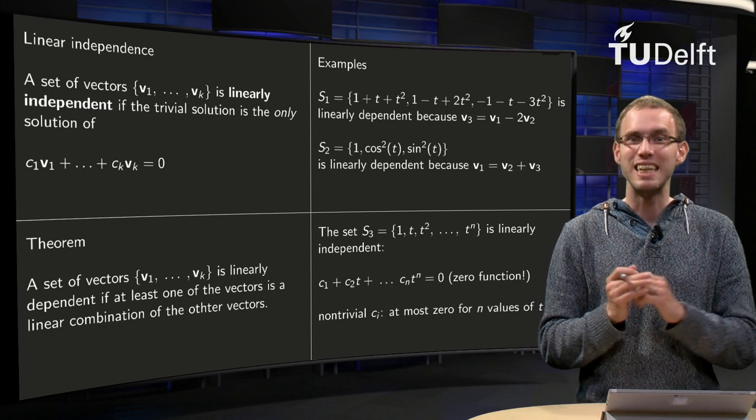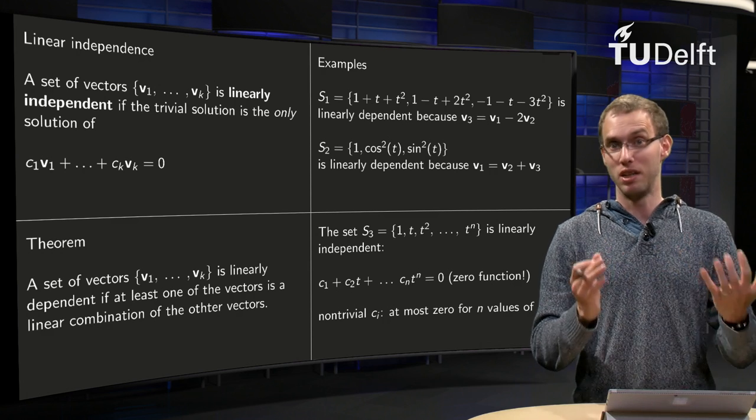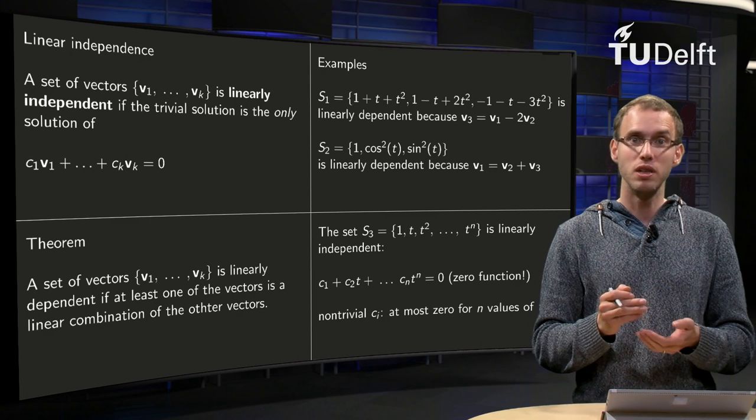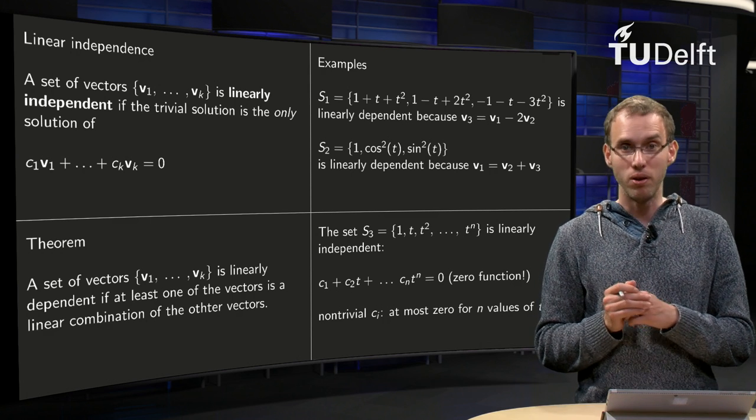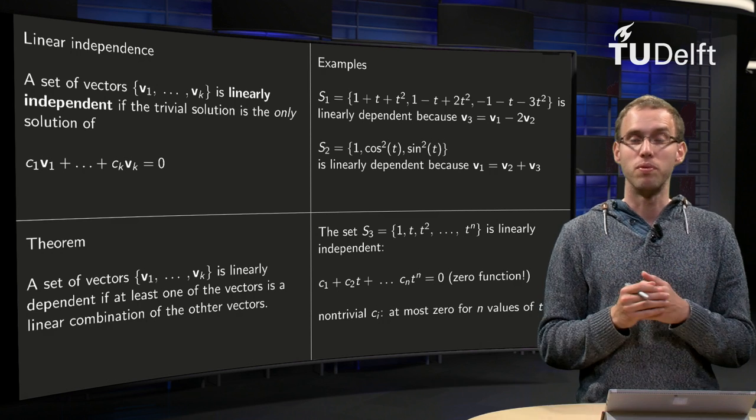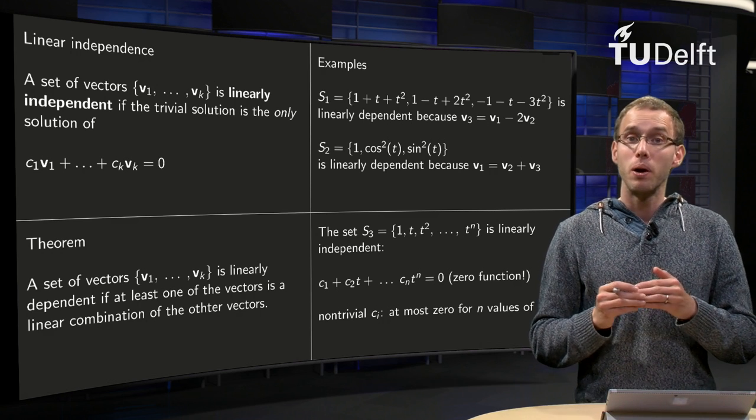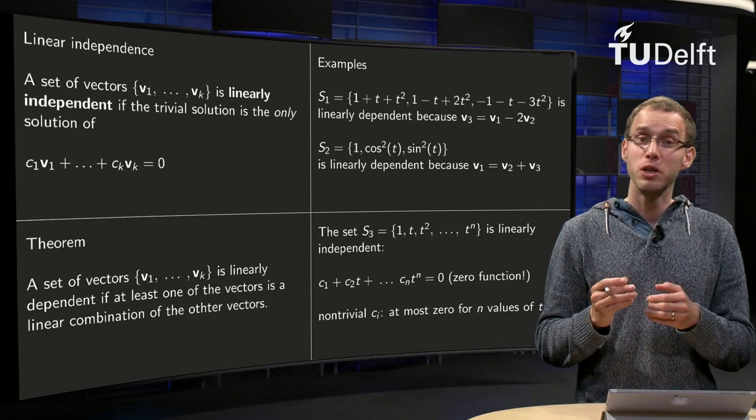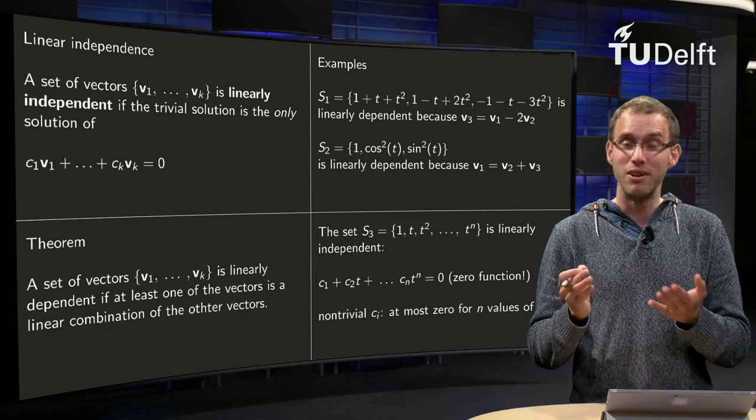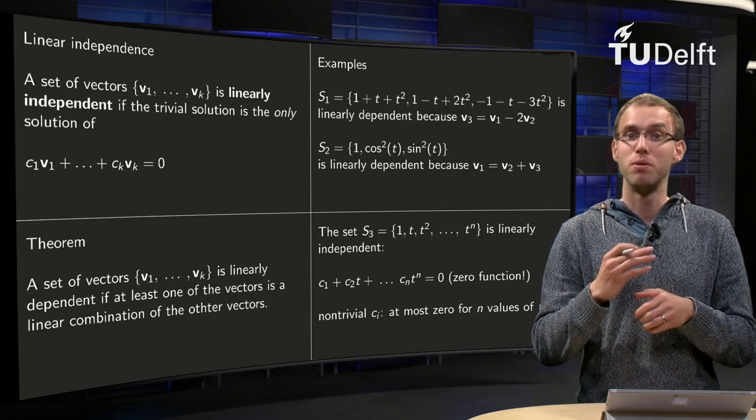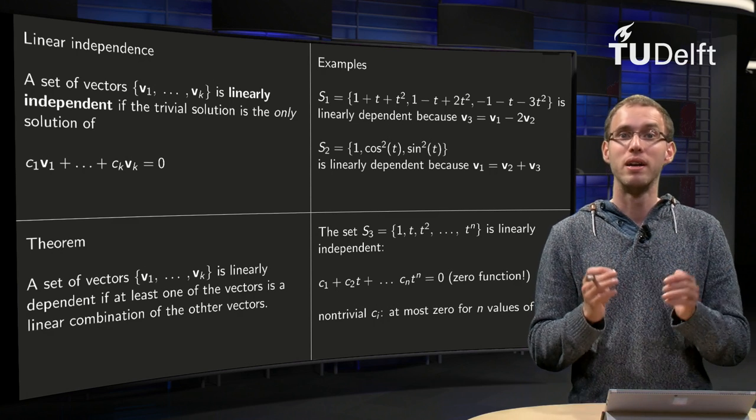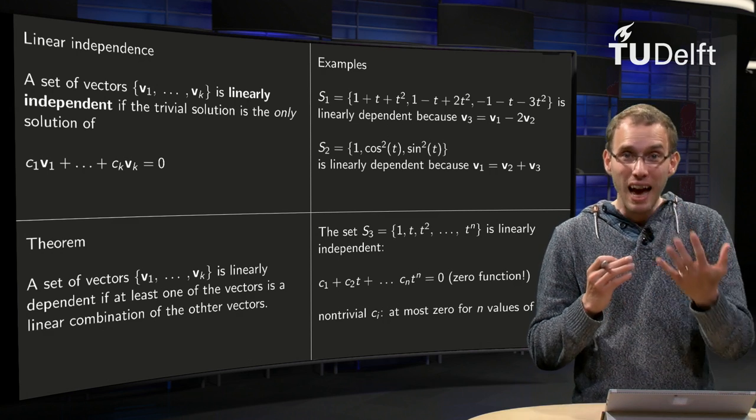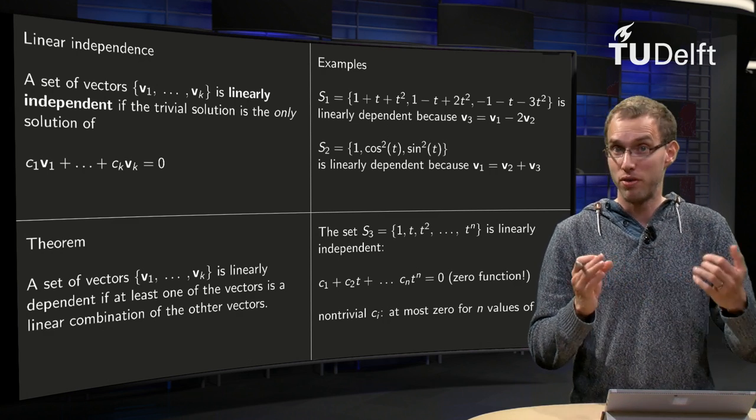So how can you see that this set is independent? Look at the definition. Look at the equation. c1 plus c2 times t plus c3 times t squared, up till t to the power n equals 0. The 0 on the right hand side should be the 0 function, the function which is 0 everywhere. But on the left hand side we have a polynomial of the nth power. We know, if you have the nth order equation, that such an equation has, at most, n real zeros. It is the main theorem of algebra.